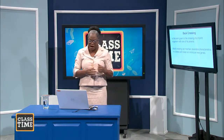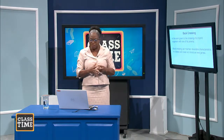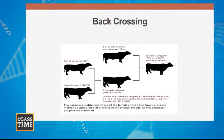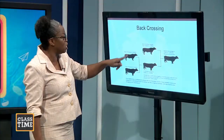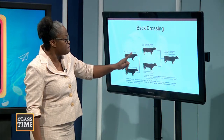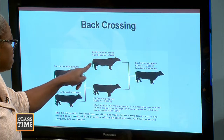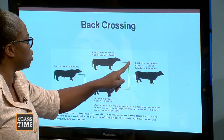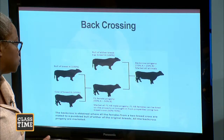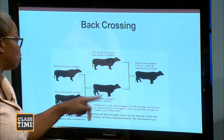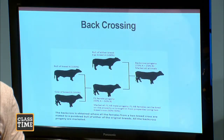The final system is back crossing — a term given to the crossing of a hybrid organism with one of its parents. We have the F1 progeny from pure breed A and B. This offspring is going to mate another pure breed. The resulting back cross progeny will contain 75% of pure breed A and 25% of pure breed B.